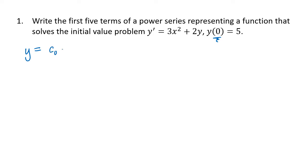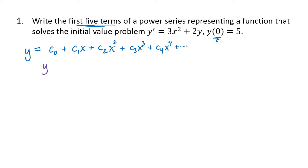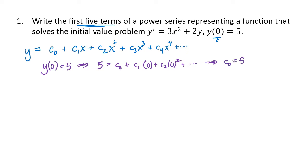So this series is going to look like c₀ plus c₁x plus c₂x² plus c₃x³ plus c₄x⁴ and so on. We're asked to find the first five terms, so we need to figure out coefficients c₀ through c₄. Because they tell us that y(0) = 5, plugging zero into this power series gives us 5 = c₀, so c₀ is 5. We've already figured out one of the five coefficients.